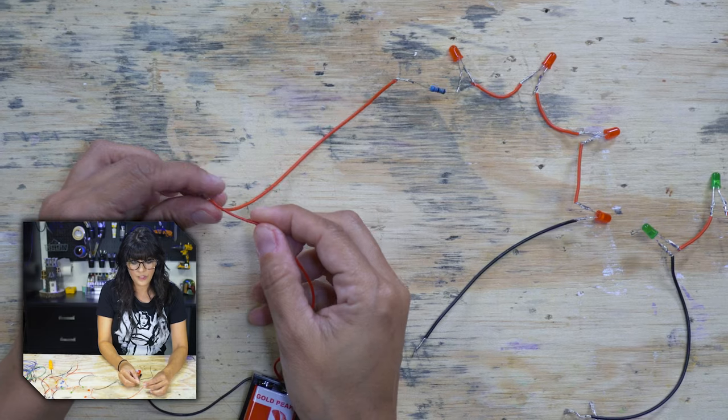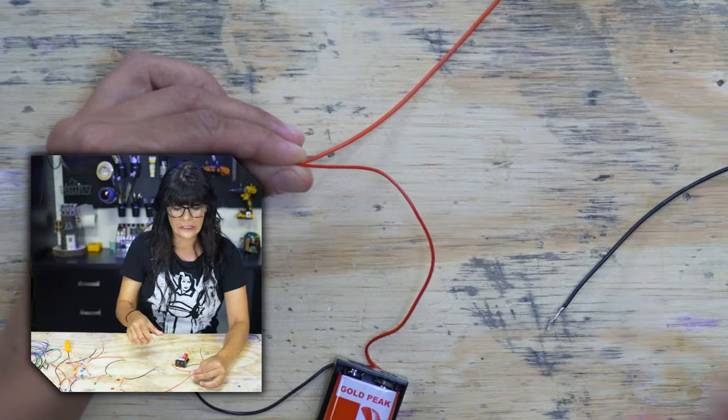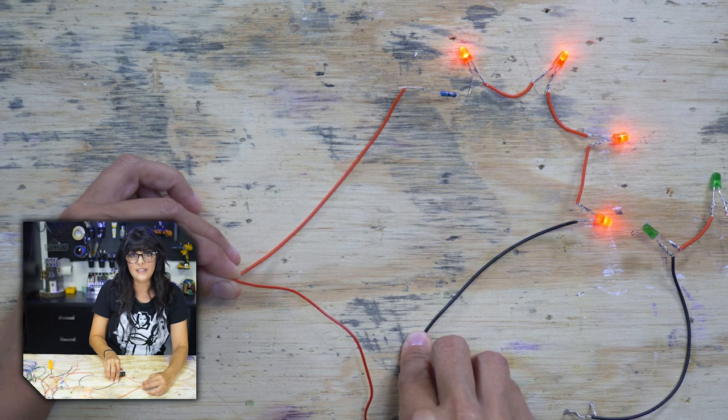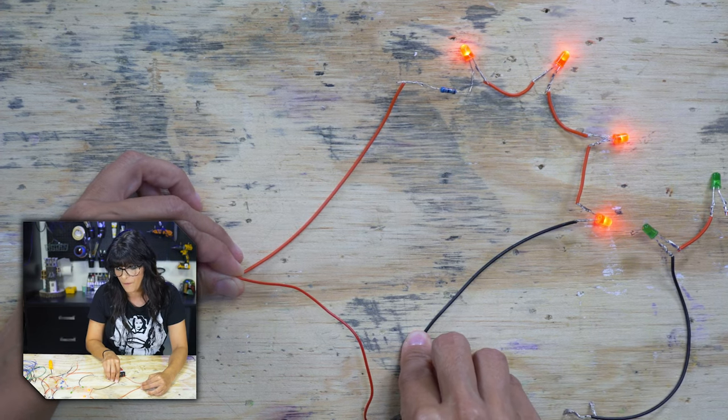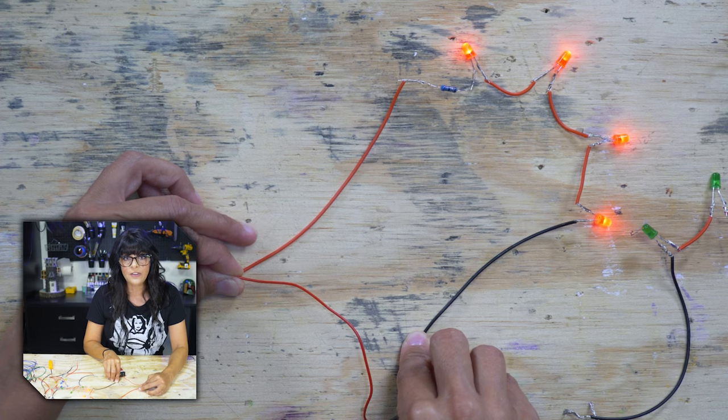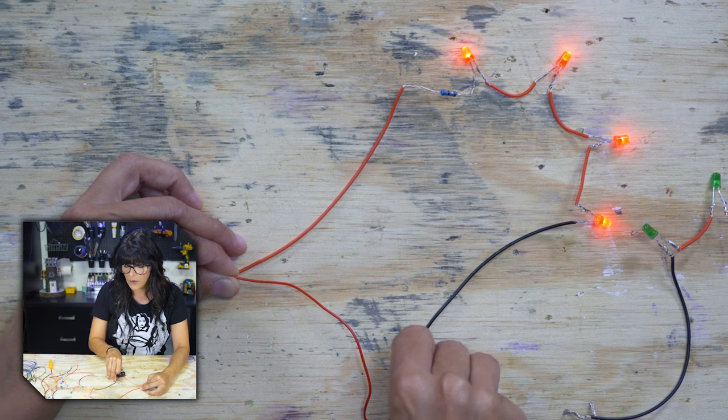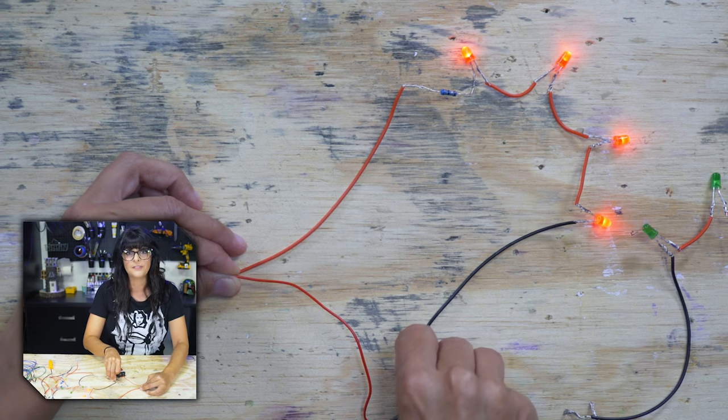All right, and we're getting a nice even glow, no funkiness, right? So we calculated the correct resistor value, because everything seems to be on, and not frying out.